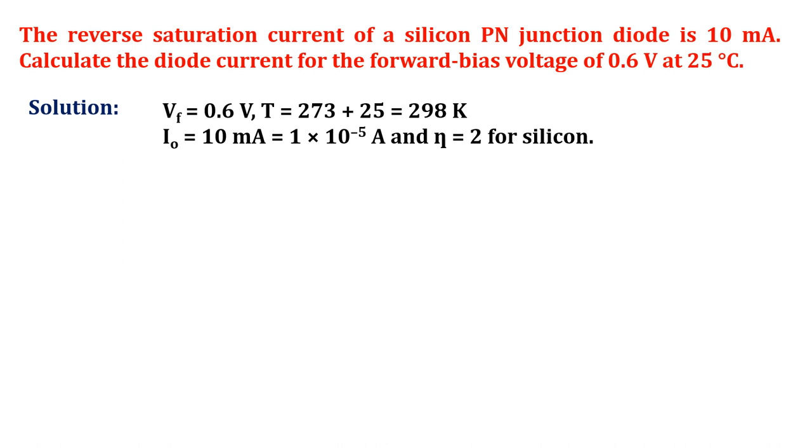In this problem, the reverse saturation current of a silicon PN junction diode is given as 10 milliamps, that is I₀ equals 10 milliampere. The PN junction diode is silicon type, so η equals 2.